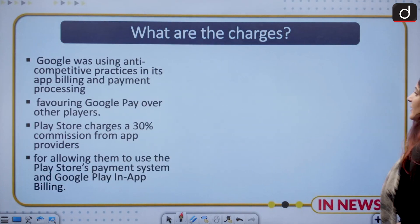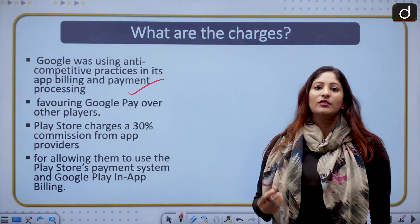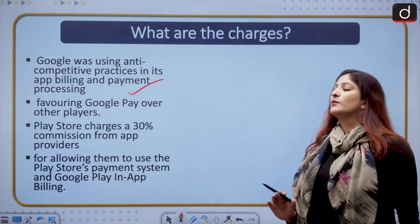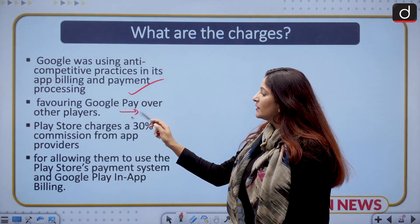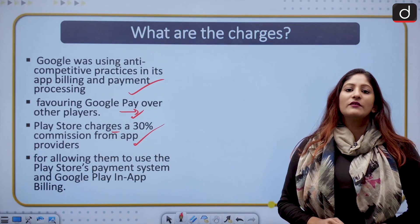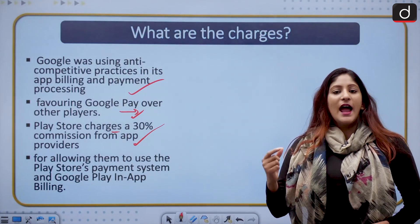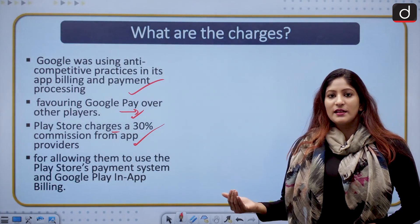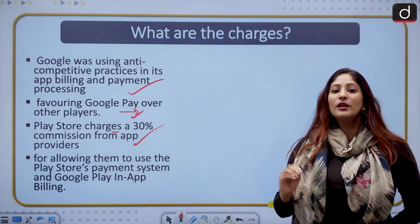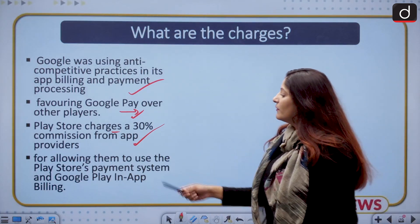The allegations were that Google was using anti-competitive practices in its app billing and payment processing. Whenever there is a need to purchase anything virtually within certain apps, Google Pay was the only option — no other payment option was available — resulting in favoring of Google Pay over other players. Play Store charges 30 percent commission from app providers, meaning Play Store was getting 30% of revenue generated through in-app purchases. Other payment players were charging lower rates, but app developers had no choice but to use Google Pay.